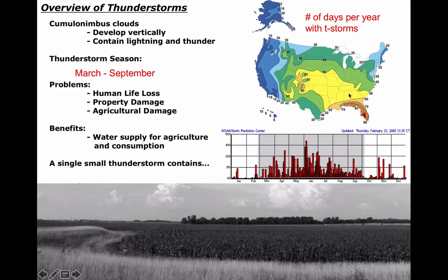Across the United States, this map shows us the number of days per year with thunderstorms. We see the hot spots down in Florida, and along the Gulf Coast you can have thunderstorms any time of year. Here in Champaign-Urbana, we have on average about 45 days a year of thunderstorms. Due to the lack of atmospheric instability, the West Coast and northeastern United States have very few thunderstorm days.